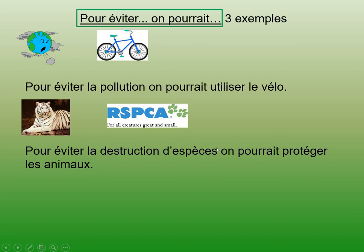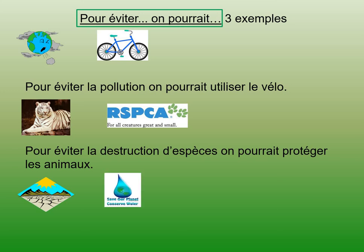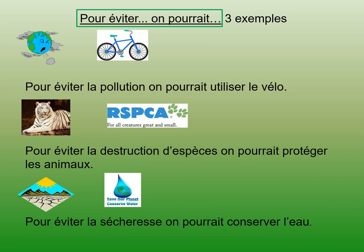In order to avoid extinction of species, it is necessary to protect animals, to help animals, to help a charity organisation — we learnt that phrase when we talked about volunteer work. And finally, in order to avoid drought, it is necessary to save water. So hopefully we have: pour éviter la sécheresse, on pourrait or il faut conserver l'eau.